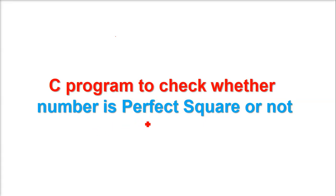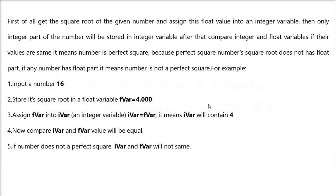C program to check whether a number is perfect square or not. Say we have a number which is given as 16. Now this is a perfect square because 4 into 4 is 16.